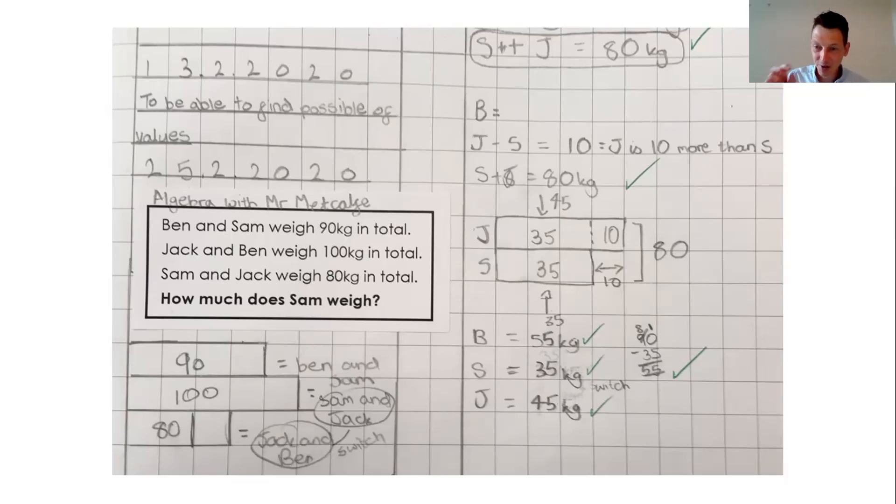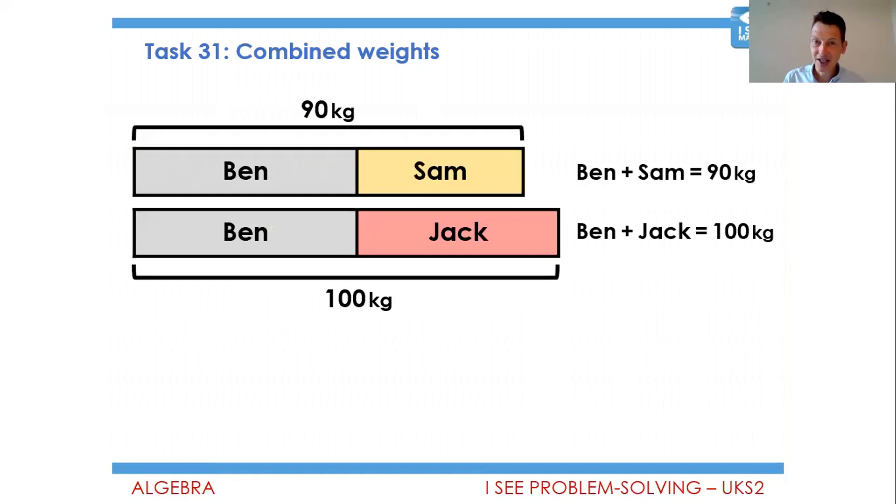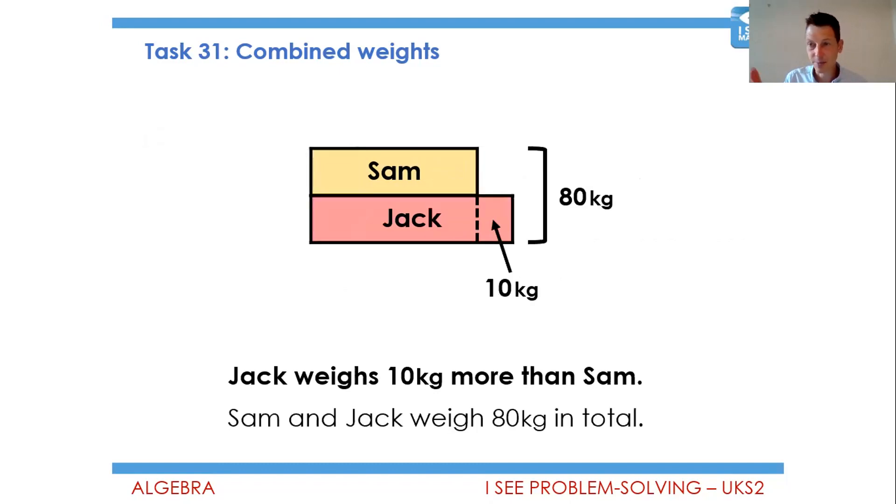So then we can have a look at that last line. Sam and Jack weigh 80 kilograms in total. We know the difference in weights between them. You can see the bar model that really breaks that down. And here, to this point, fairly directed, you could say. And the worked example just demonstrates that in those differences, Ben plus Sam and Ben plus Jack. And so we're seeing the difference between Sam and Jack is 10 kilograms, which hopefully the bar model will essentially help to present a visual representation that's pre-done, if you like, to show that Sam weighs 35 kilograms.